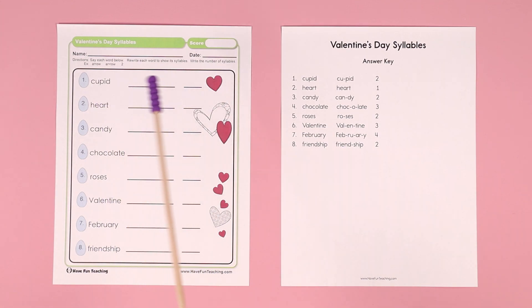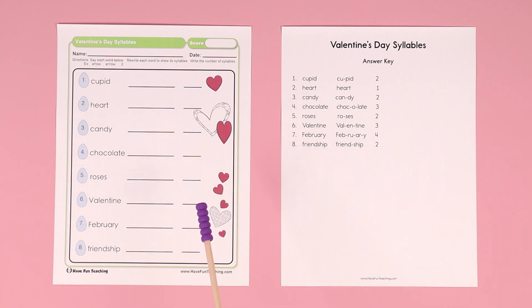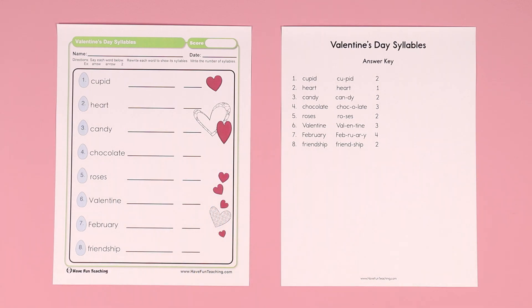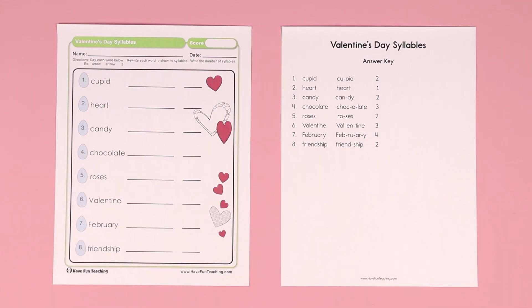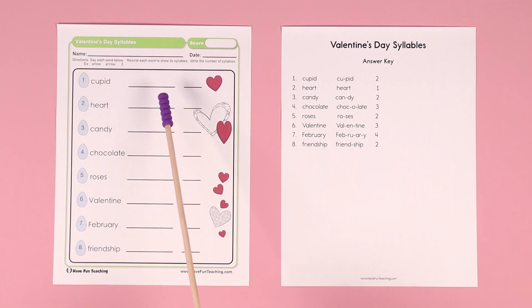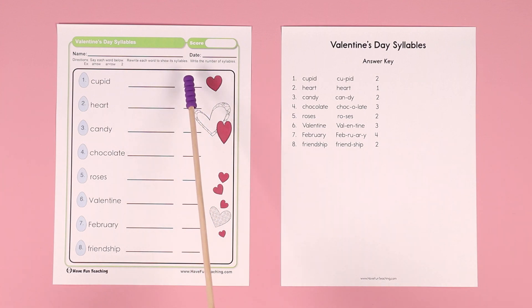Syllables are when you take a word and you break it apart into the sounds that you hear. So for example, in number one, Cupid — you hear two sounds and you can have your kids clap. Cupid — two syllables. So they would write 'Cu' and then a dash and then 'pid', P-I-D, and then write the number two.